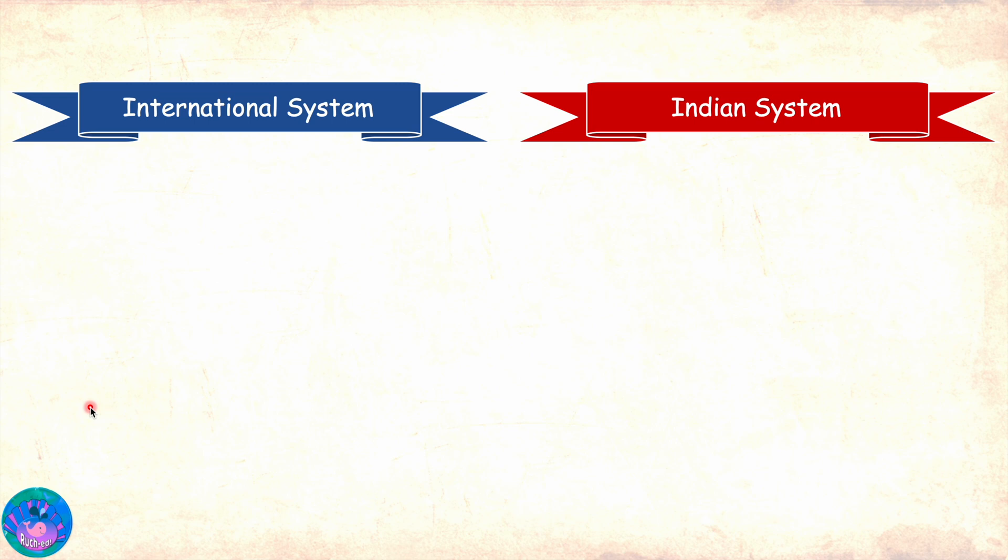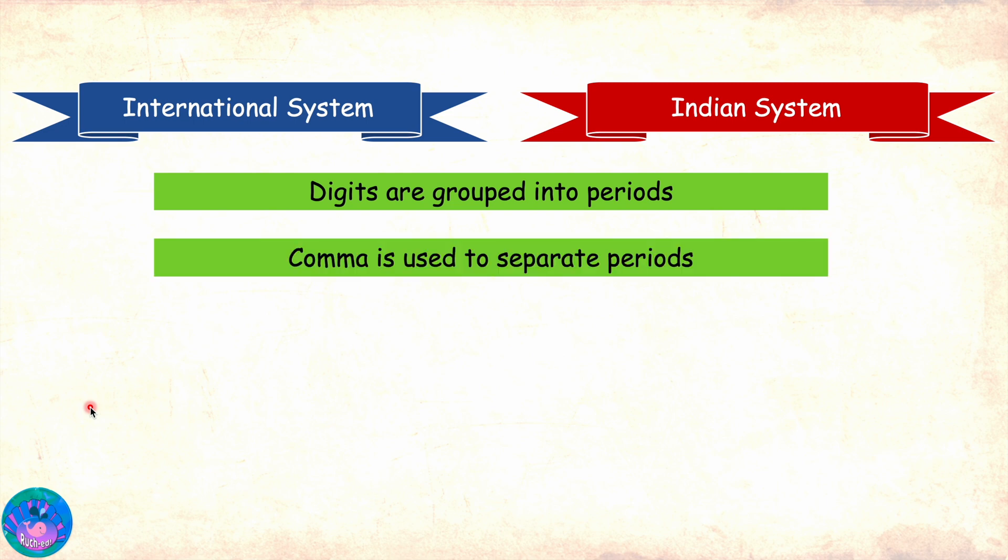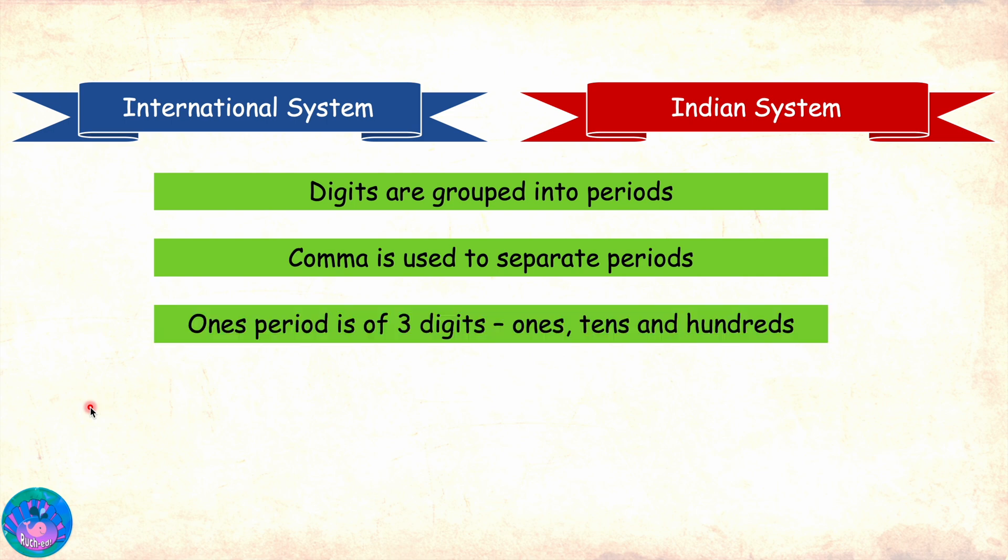In both systems, the digits are grouped to form periods. In both systems, we put commas between periods to separate them. In both cases, the ones period is formed by ones, tens and hundreds digits. Now, let's see the differences.